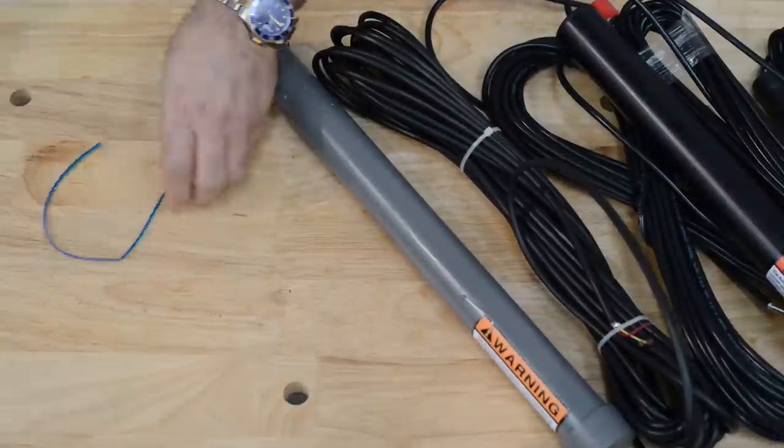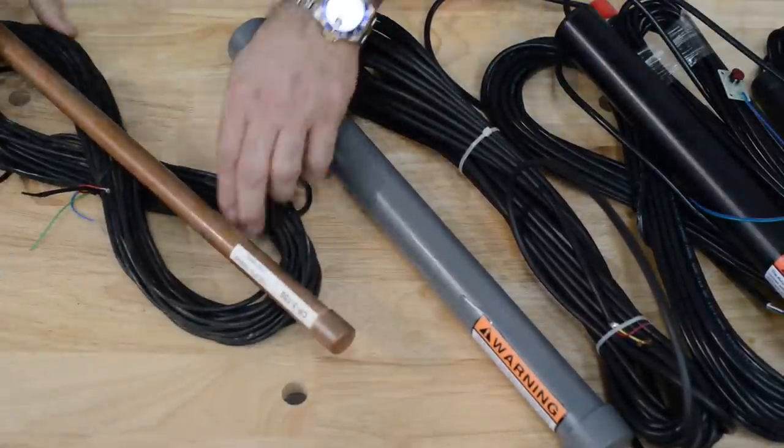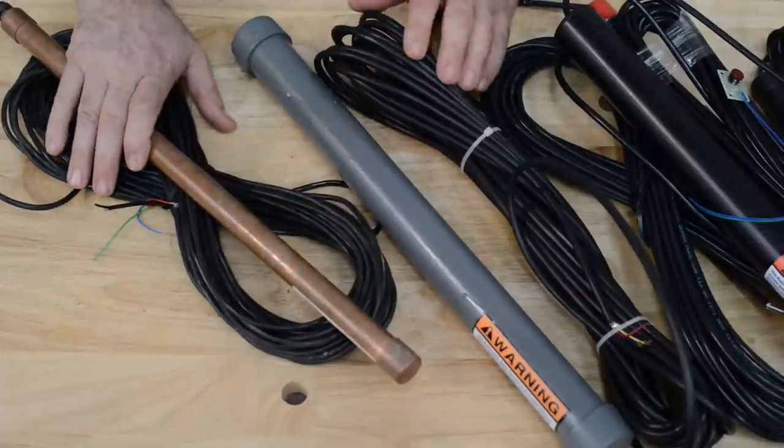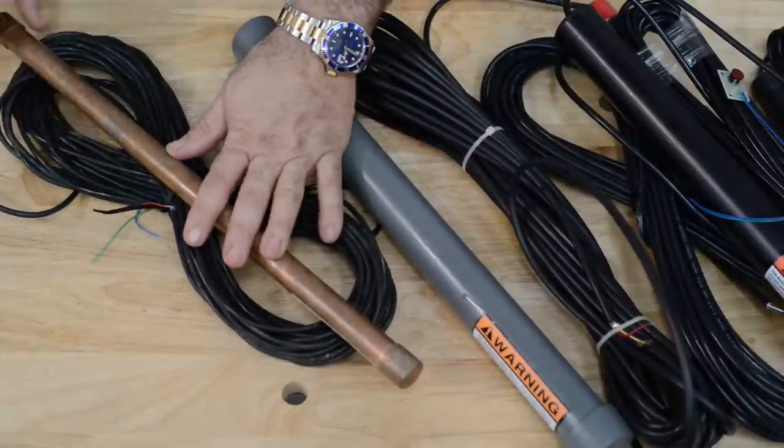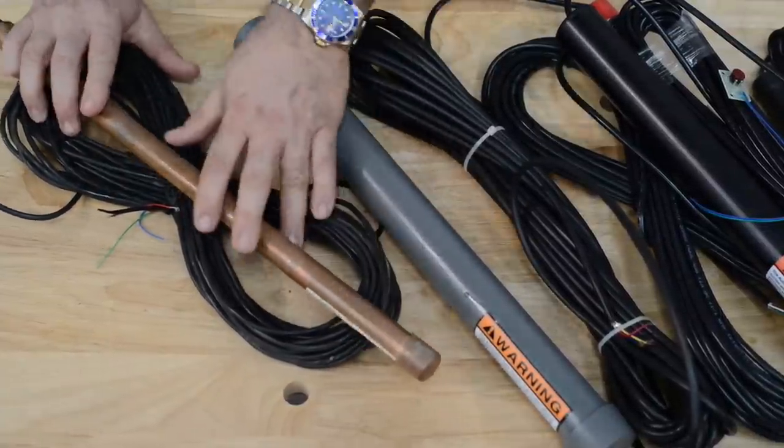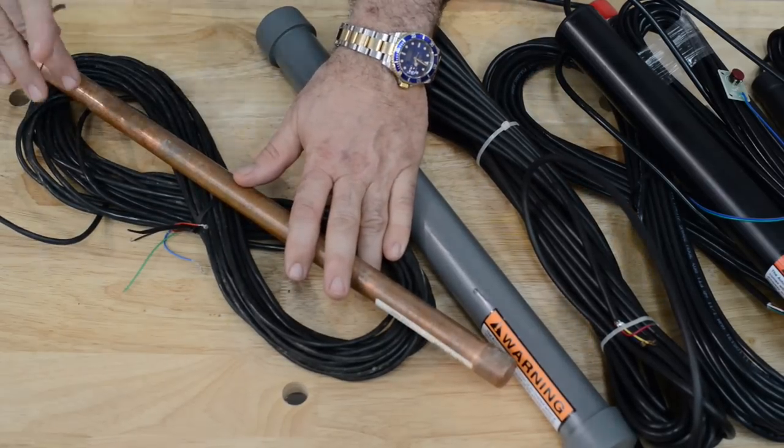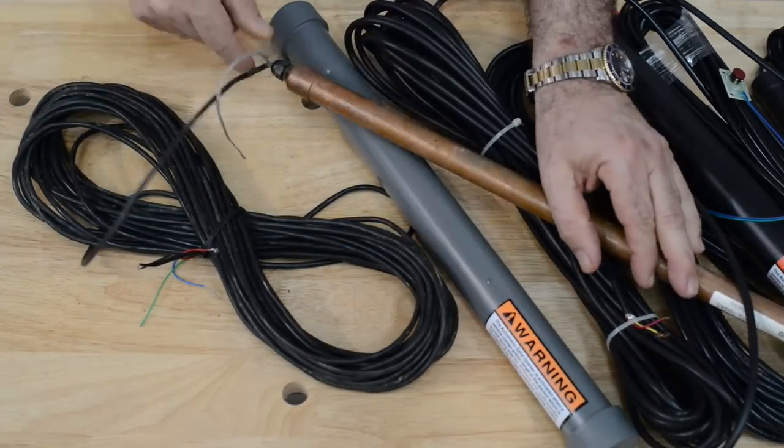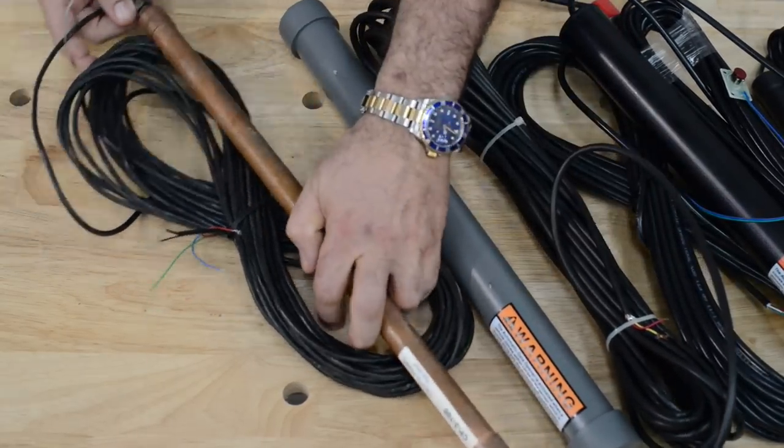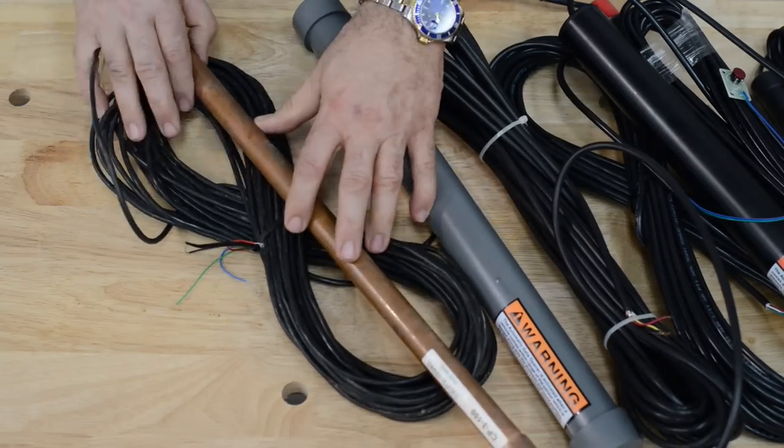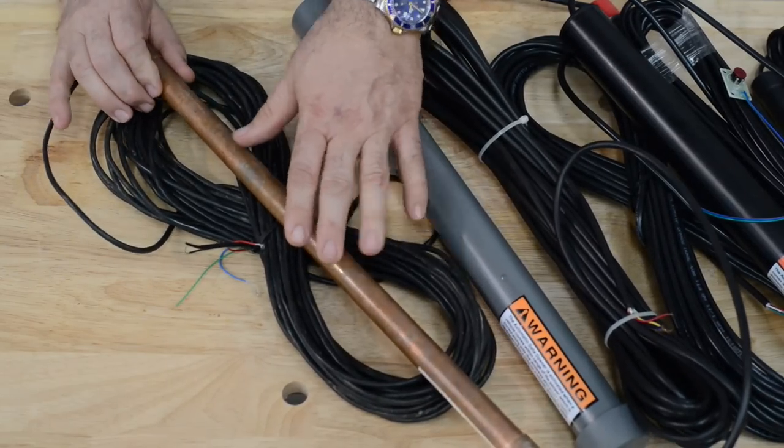And then over here is probably our most popular one. This is the estate swing deluxe exit wand. You can see it looks very different. It's all copper. It has a grounding wire on the end here. And that's what makes this a great lightning prone area exit wand.